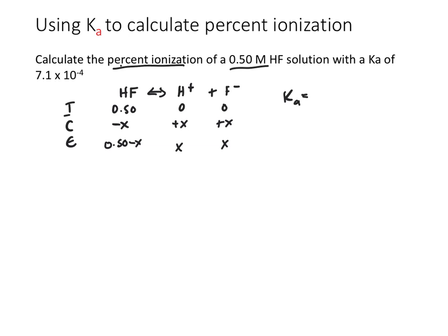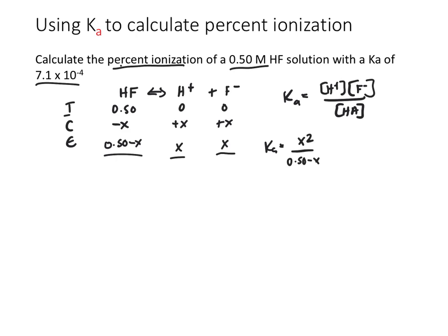Ka in this context is H⁺ times F⁻ concentration, all divided by the concentration of HA. We've been given our Ka value and our equilibrium setups, so we plug those in: Ka equals X squared over (0.50 minus X), which equals 7.1 × 10⁻⁴. Because Ka is so small, we drop X in the denominator, giving us X squared over 0.50 equals 7.1 × 10⁻⁴. Manipulating this, X squared equals 3.6 × 10⁻⁴.